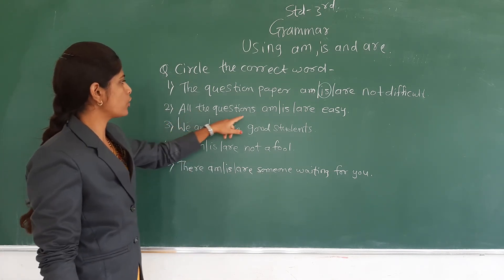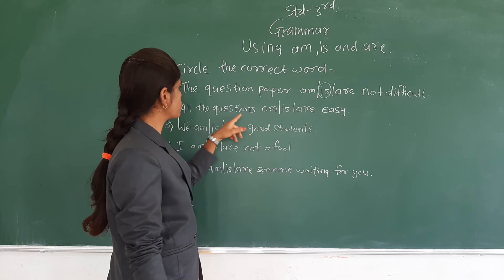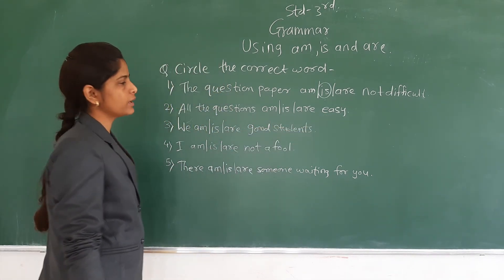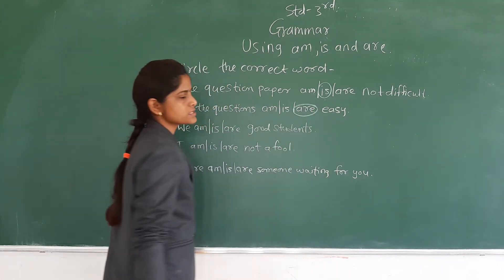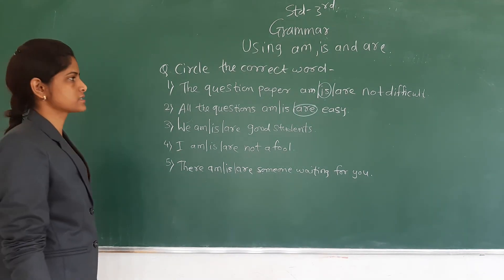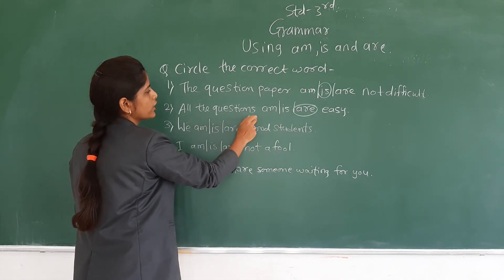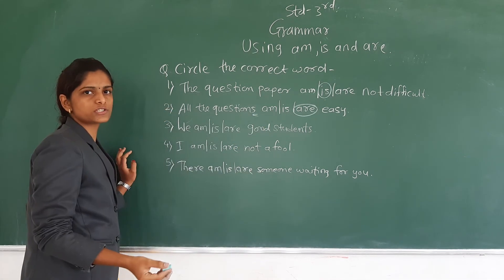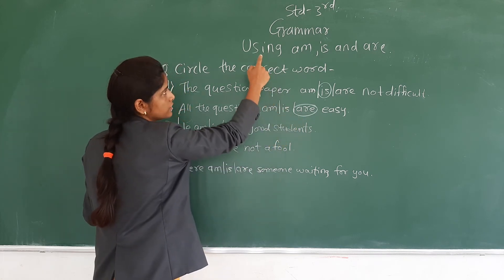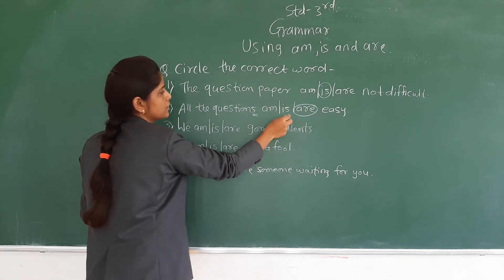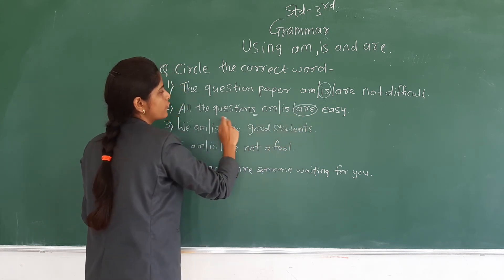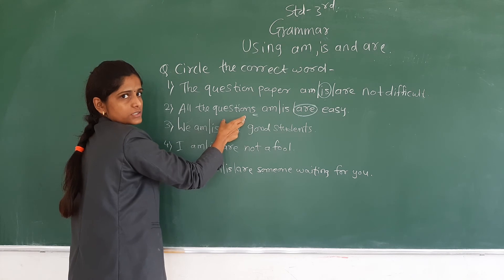The second: all the questions — am, is, or are — easy. Here the answer will be are, because are is used to describe many things. All the questions — questions means many questions are there. So questions are easy. Are should come here because questions are many.